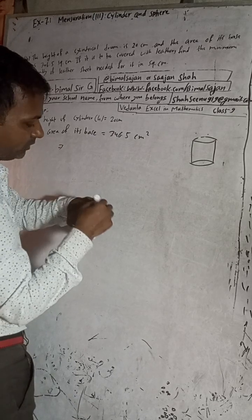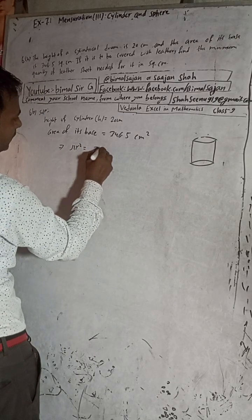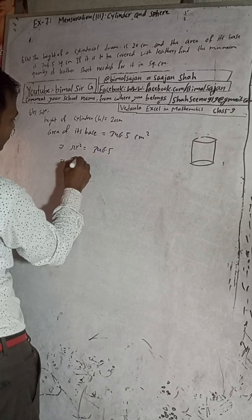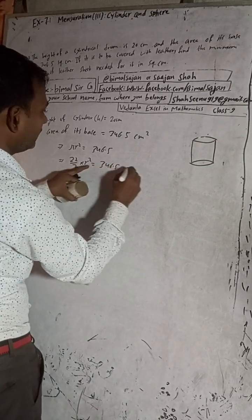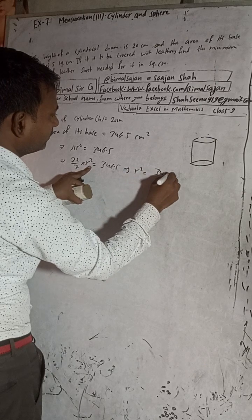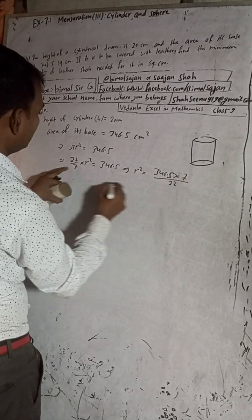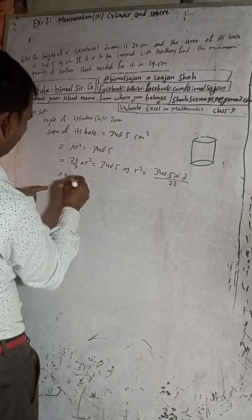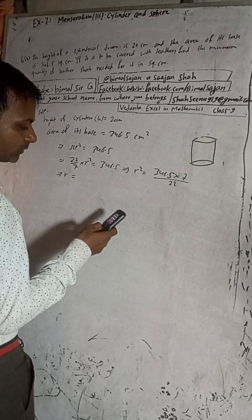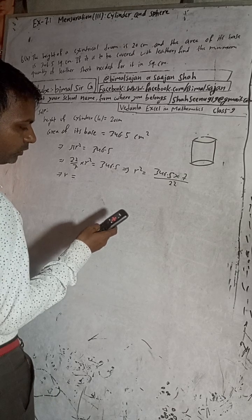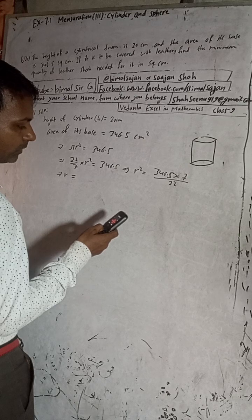Now we know the area of its base - the base is circular, so area of the circle is πr² = πr² = 346.5. Now π value is 22/7, so r² = 346.5 × 7 / 22.